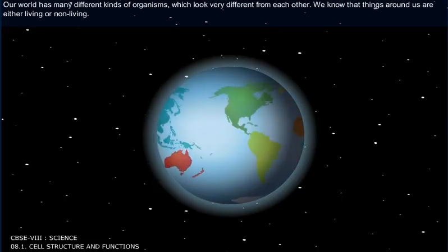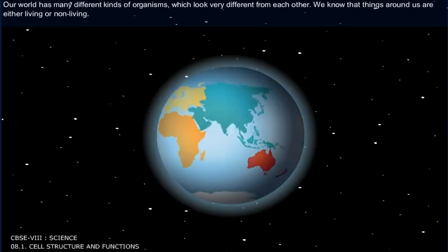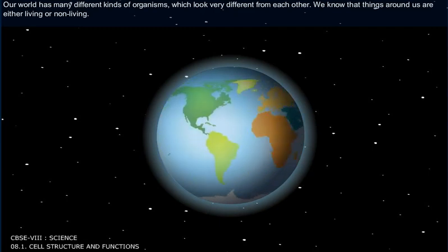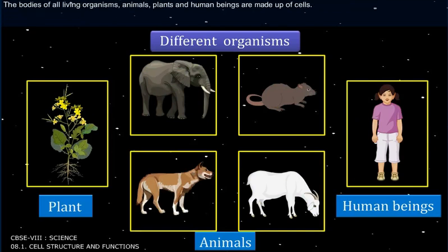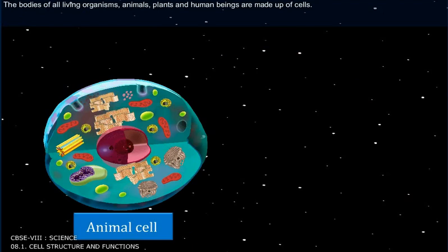Our world has many different kinds of organisms which look very different from each other. We know that things around us are either living or non-living. The bodies of all living organisms — animals, plants and human beings — are made up of cells.